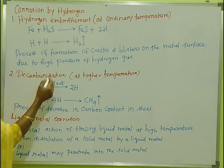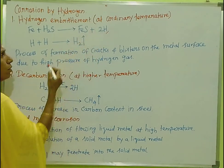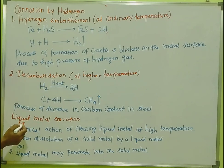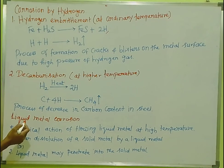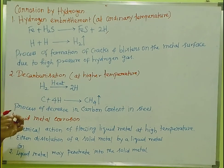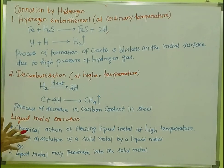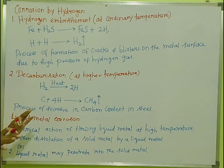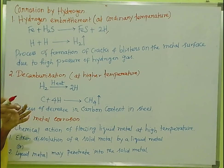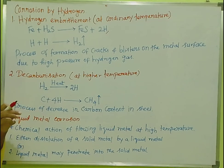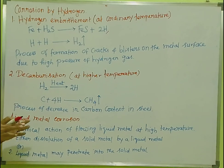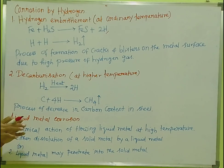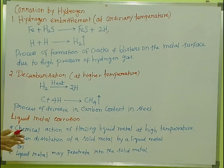Let's look at hydrogen embrittlement. Atomic hydrogen is formed — 2H is formed. This atomic hydrogen is very small and can easily penetrate. It collects in the empty spaces, voids, in the metal. Atomic hydrogen is collected in these voids.